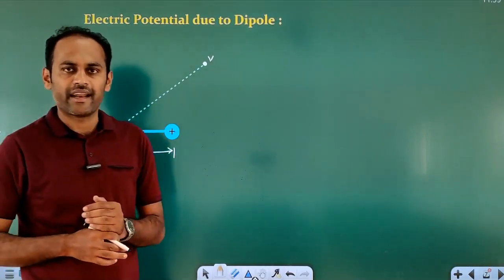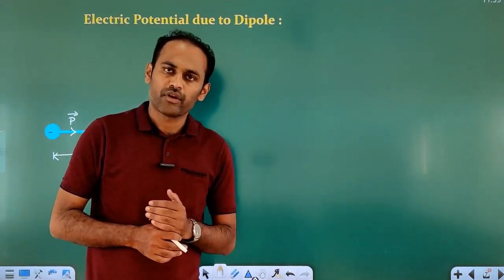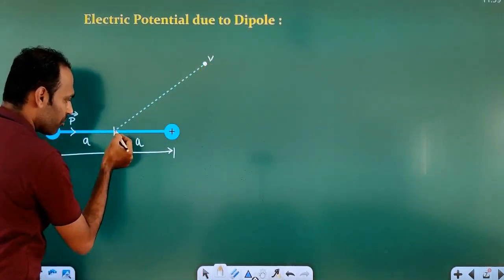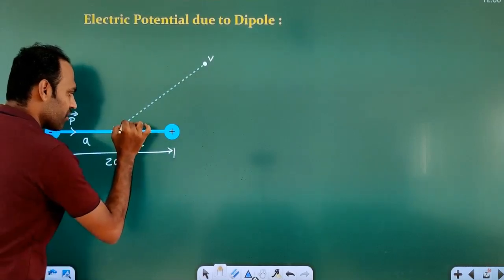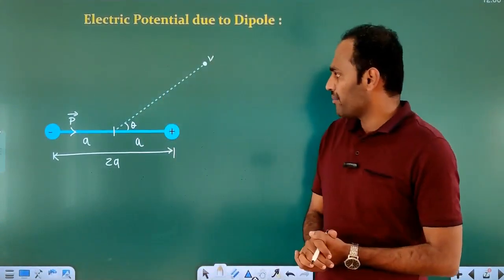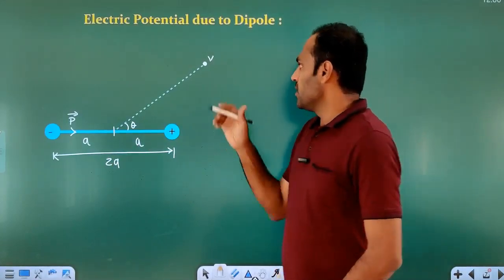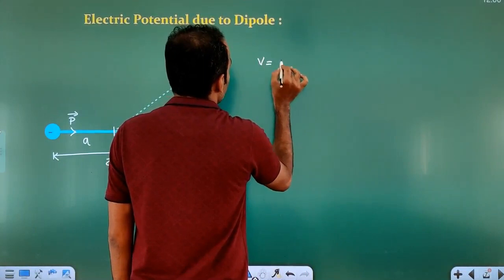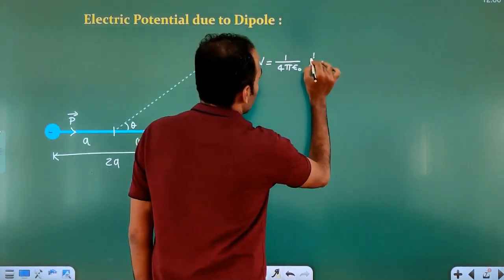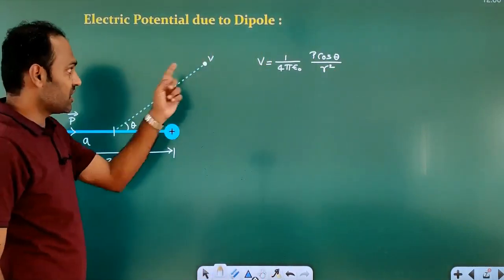We have already discussed about axial electric field, equatorial electric field, as well as electric field at any general point. The electric potential at this general point is: 1 divided by 4 pi epsilon naught, times P cos theta divided by r squared.